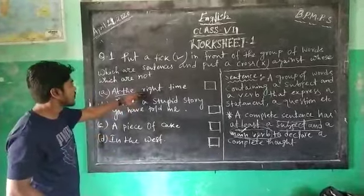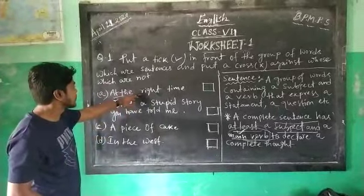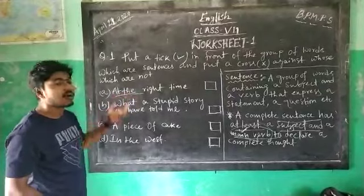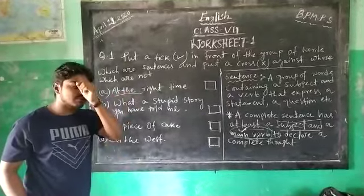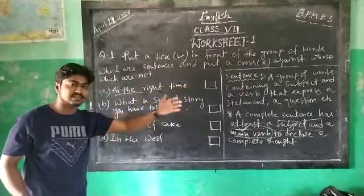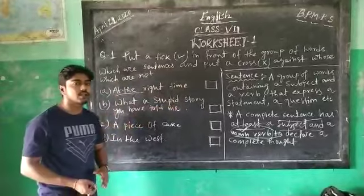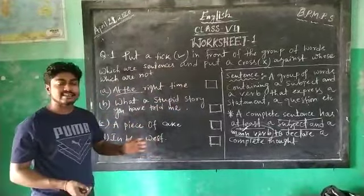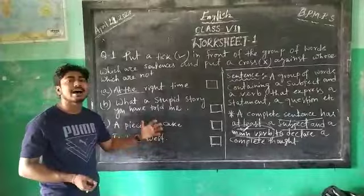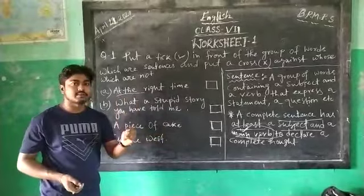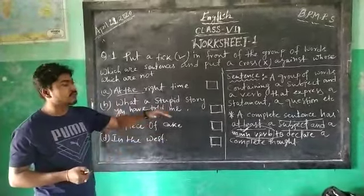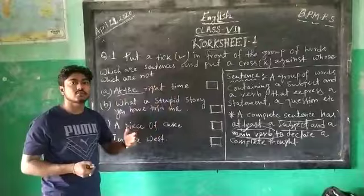There is no main verb here. You can think properly — where is the verb? What is called a verb? You know it from your previous classes, Class 4 and 5. What is a verb? A verb is an action word. Verb is an action word.